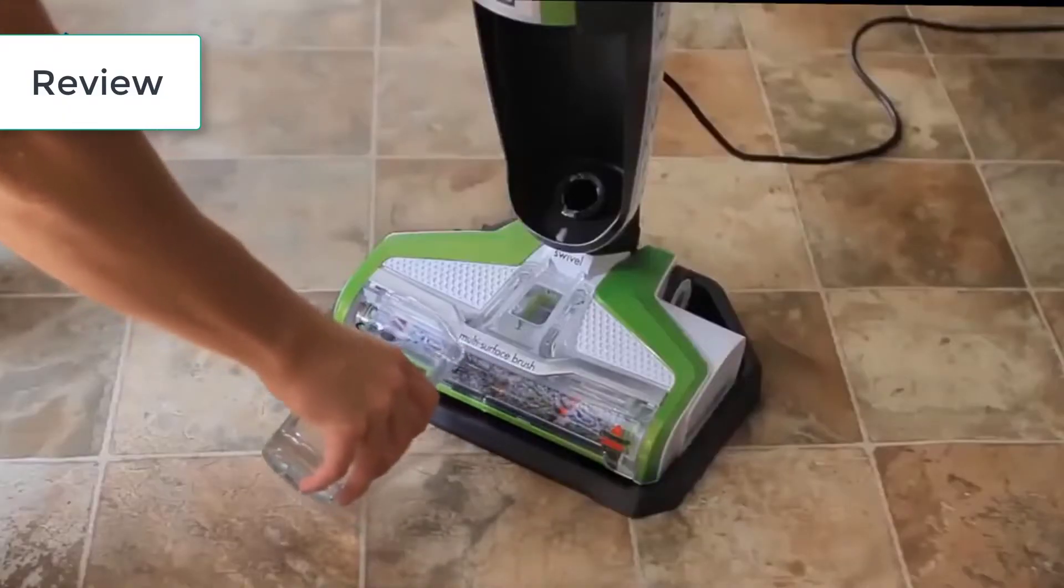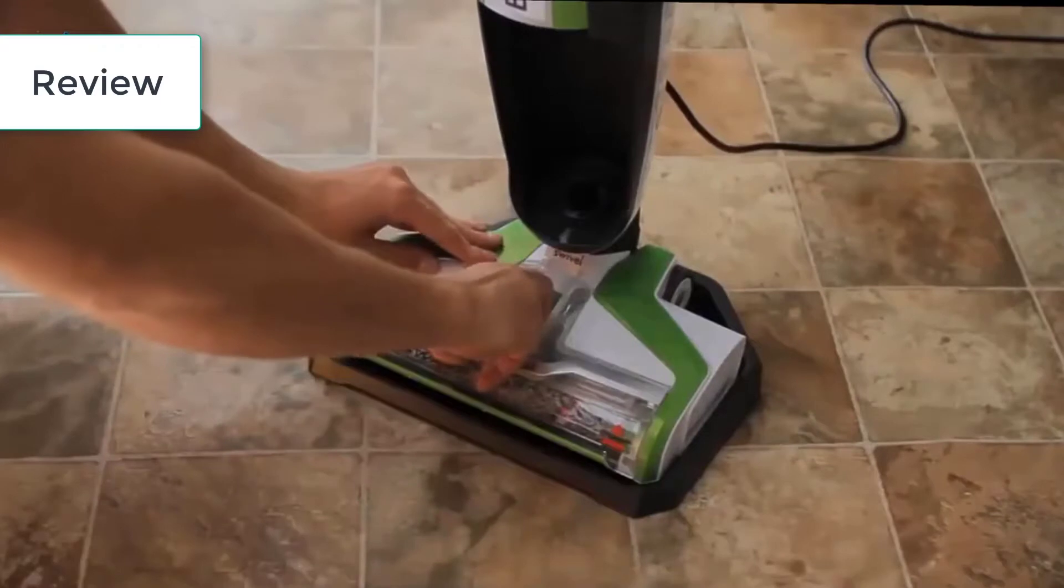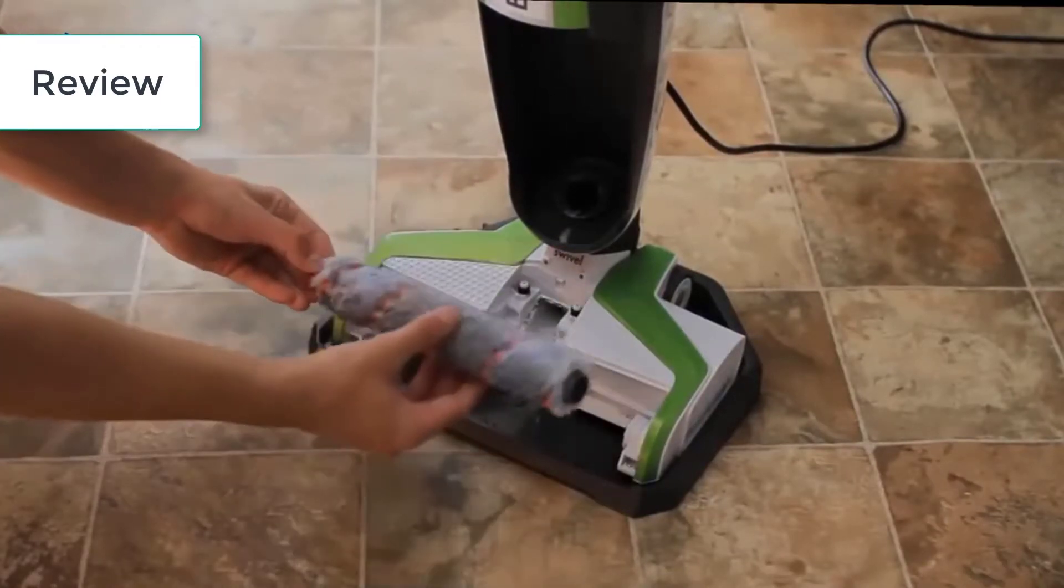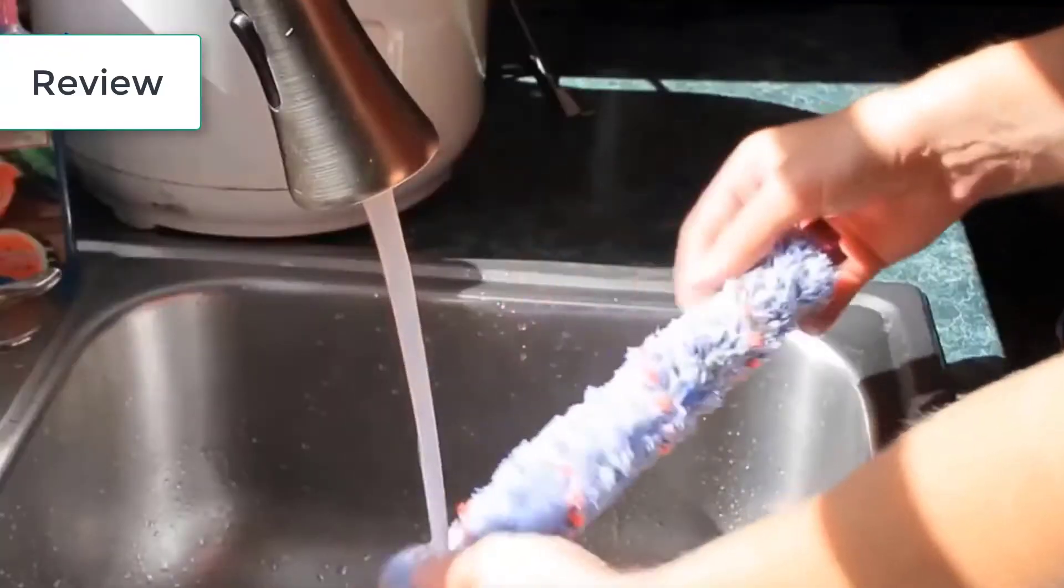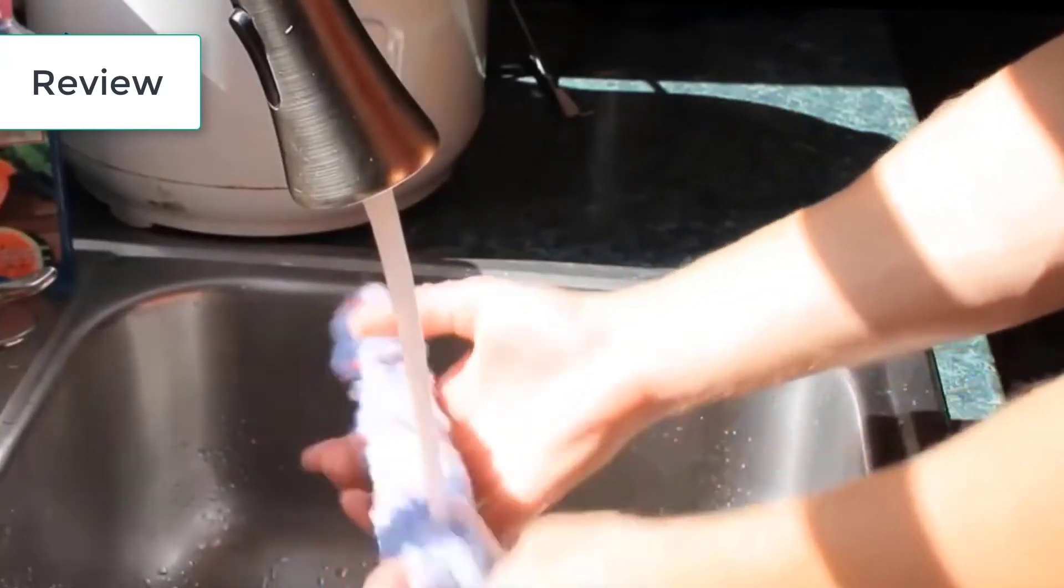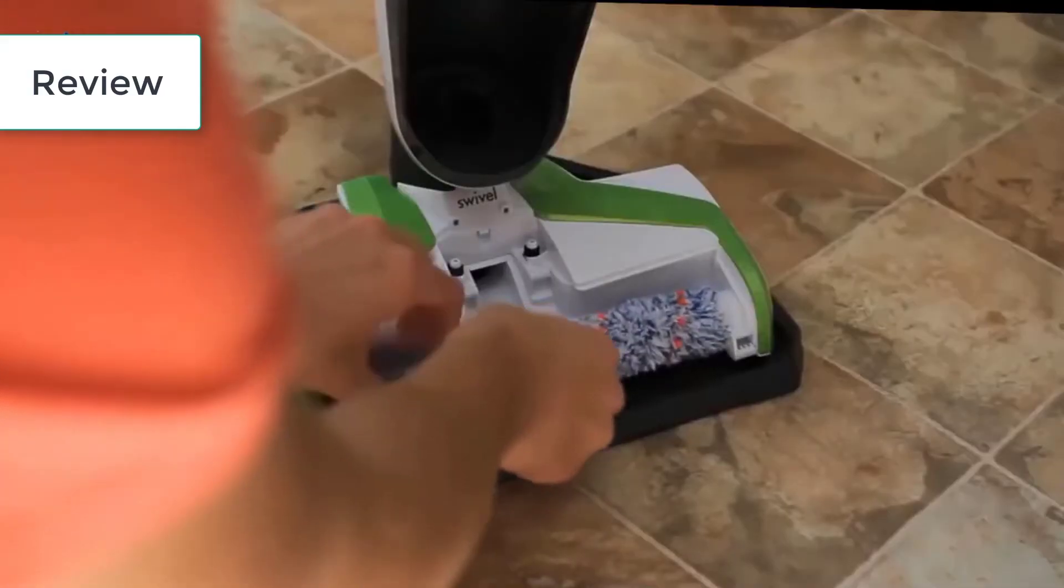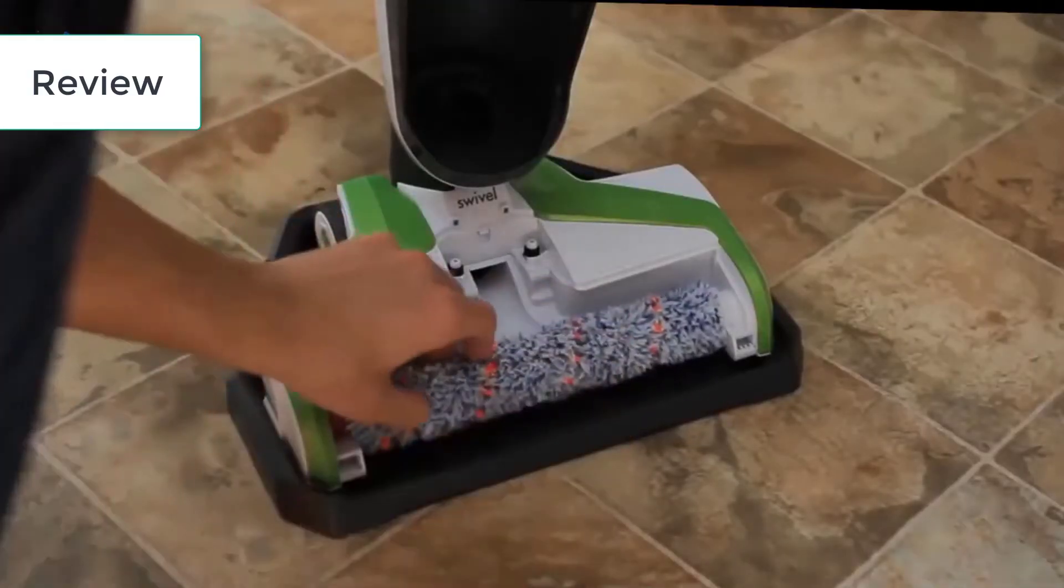It also has an easy clean storage tray, which makes it pretty easy to clean the brush without removing it. To get more of a thorough wash on the brush, it's very easy to just pop it out and rinse it as you would any other rag. Popping it back in is just as easy, and there you go.